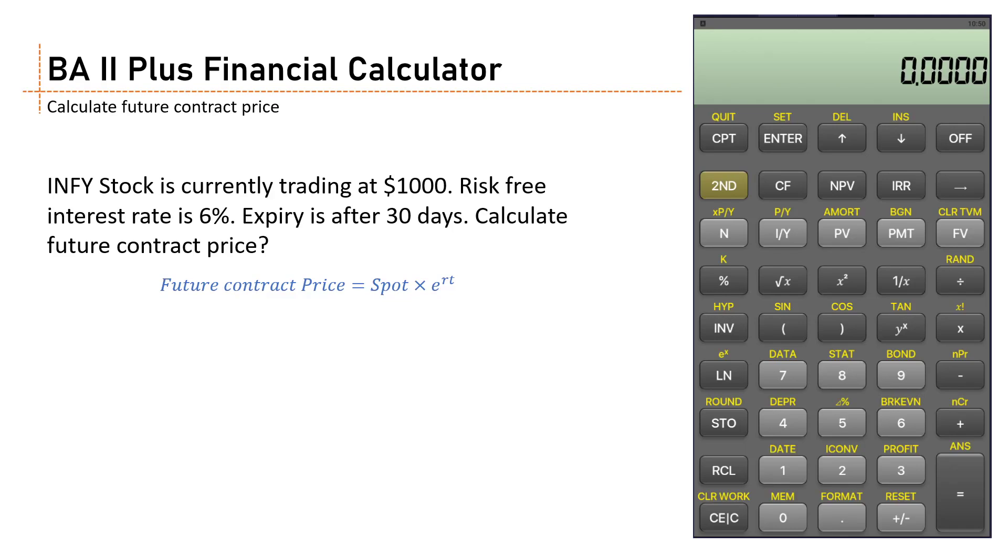Hello friends, in today's video we will learn how to use the BA II Plus financial calculator to calculate future contract prices. Let's suppose Infosys stock is currently trading at $1000—that means the spot price is $1000. Risk-free rate is 6% and expiry is after 30 days. Calculate the future contract price.